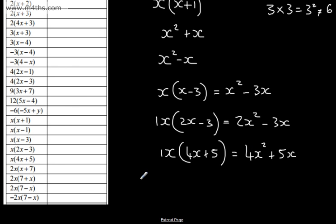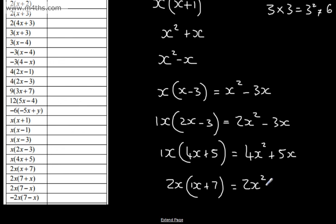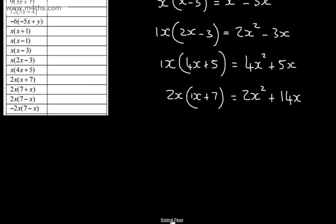Let's now go to this one: 2x, and then we've got x plus 7. The only real difference here is that the number — or what we call the coefficient — in front of the x is outside the brackets. It really doesn't matter. If you want to think about that as a little 1, 2 times by 1 is 2. x times by x is x squared, so we have 2x squared. 2 times by 7 is 14, and then we've got the x, so it's going to be plus 14x. If we look at the next one, this is exactly the same — it's just the other way round. So x times 7 plus x is going to give exactly the same answer.